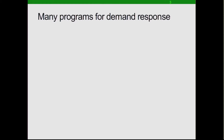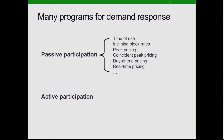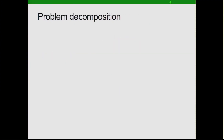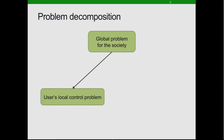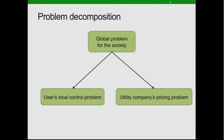There are many programs designed for demand response, which can be further divided into two categories. One is passive participation, one is active. For passive participation, the utility company will design the pricing scheme, and then the customer will control its own power demand under this pricing scheme. In the active participation, there is more interactive interaction in the electricity market. This decomposes the global optimization problem into two sub-problems: the local control problem for the user, which needs algorithm design, and the pricing problem for the utility company, which requires market design. These two are closely coupled with each other.